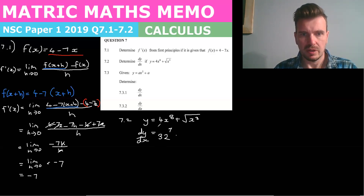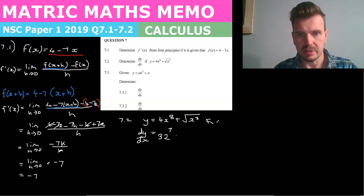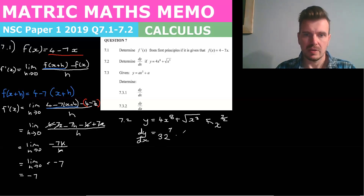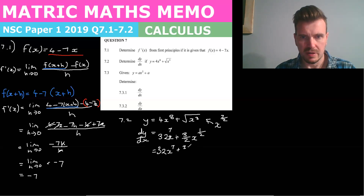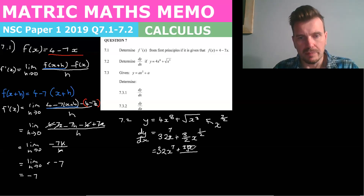For the root x cubed term, we need to rewrite it. The square root of x cubed is the same as x to the 3 over 2. So the derivative gives us plus 3 over 2 in front, and x to the power of 3/2 minus 1, which is x to the 1/2. Completing that: dy/dx equals 32x to the 7, plus 3 over 2 times x to the half, which is the same as the square root of x over 2. And that is your final answer.